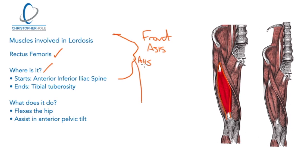The rectus femoris comes all the way down with the rest of the quadriceps, joins into the quadriceps tendon, through the patella, and through the patellar tendon into the tibial tuberosity — the lump you feel about an inch or two below the patella on the front of your leg. So with the iliacus coming off the inside and the rectus femoris, when these muscles become tight and shortened they will pull the pelvis down.